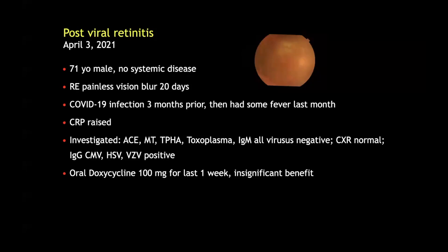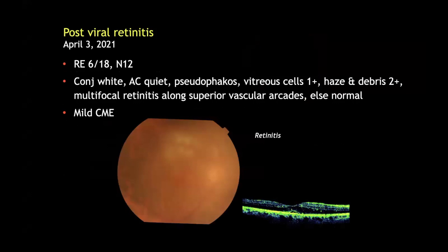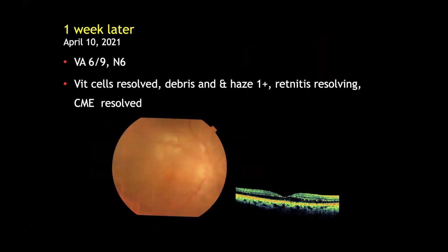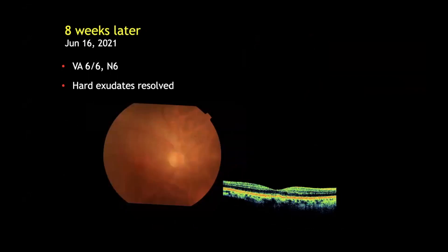A 71-year-old male presented in April this year with painless blurring of vision in the right eye for 20 days. He had had COVID infection three months prior and then had some fever following that. He had been investigated by the referring physician for the retinitis and all investigations were negative; he had been on doxycycline for a week with no benefit. We saw him with retinitis and vitreous cells and haze, and he was placed on oral steroids with rapid resolution at one week and complete resolution at eight weeks.